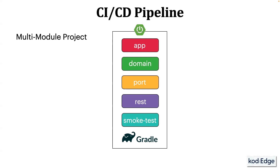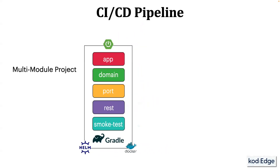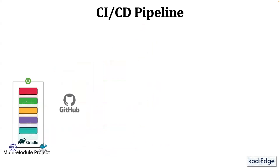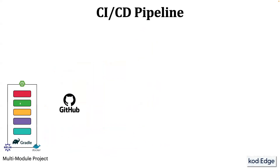Once our project is ready, we will add a Dockerfile to containerize the application and a Helm chart for managing the Kubernetes manifest configurations. After that, we will push our project to the GitHub repository.